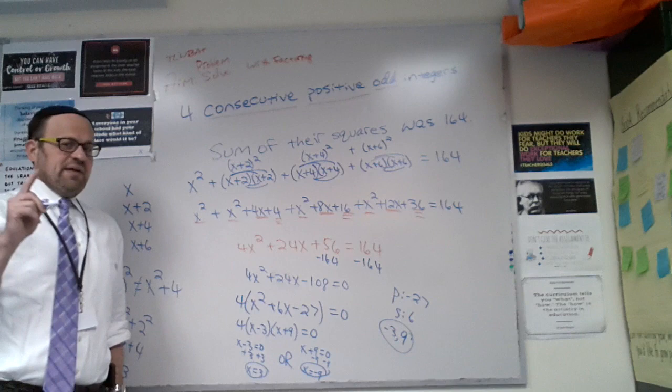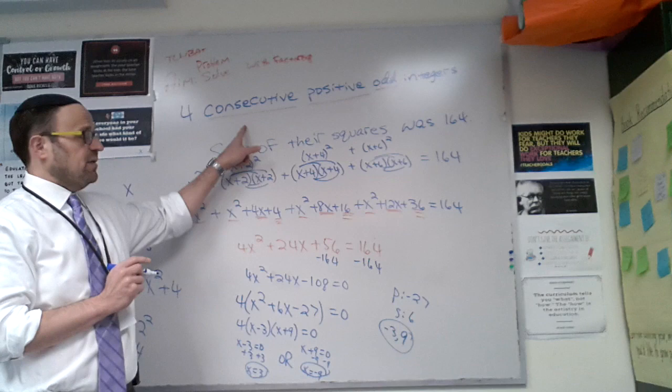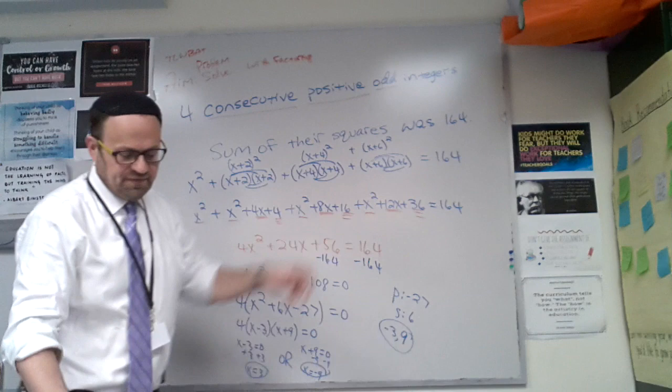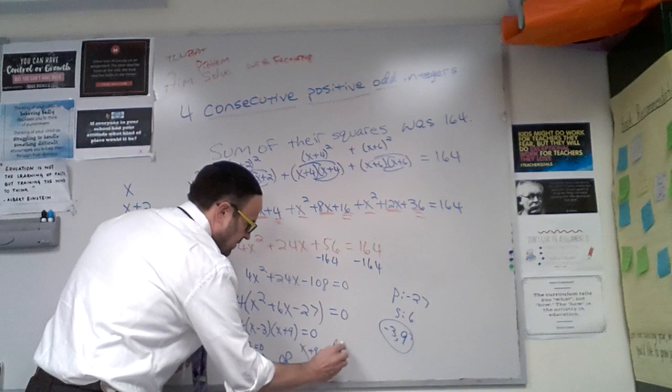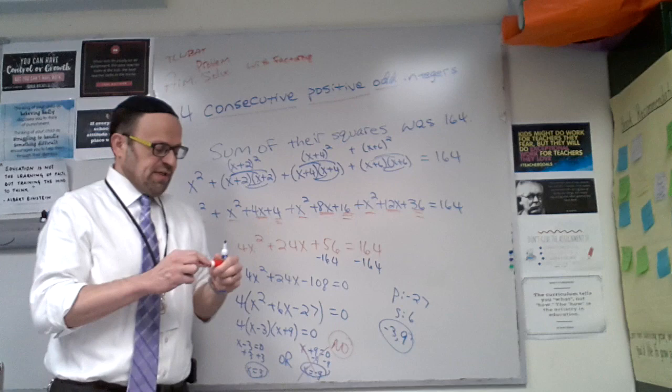We've got to stop and think. Are both of these valid contenders for an answer here? Come back to the wording of the problem. It says 4 consecutive positive. Got to cross out that negative. Can't have a negative number if the problem specifies that they must be positive.